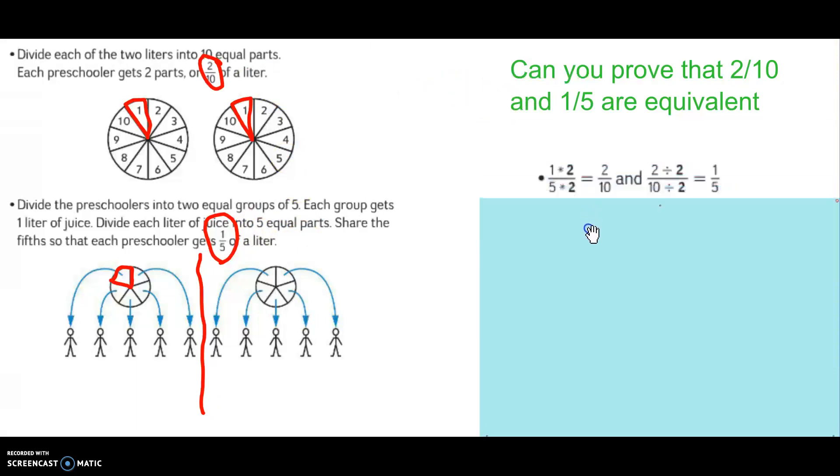One way to prove it is with our equivalent fraction rule using multiplication to find an equivalent fraction. Here we took one-fifth, multiplied it by two, and we got two-tenths. We're comparing two-tenths and one-fifth to prove that they are equivalent. If I can use this multiplication rule, I get an equivalent fraction.